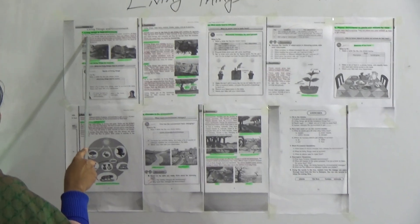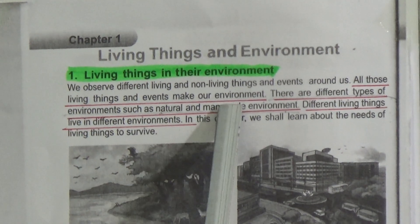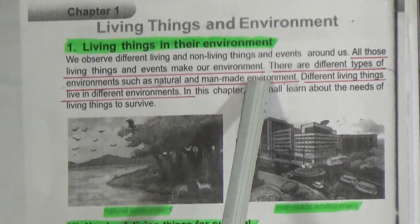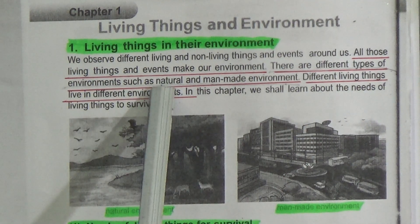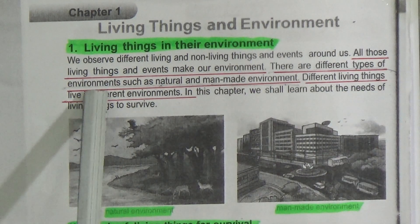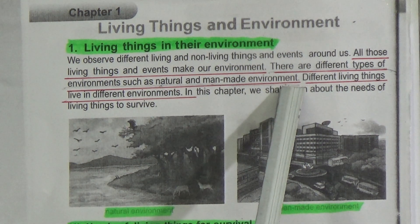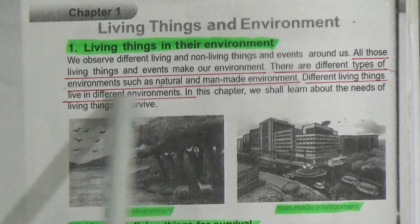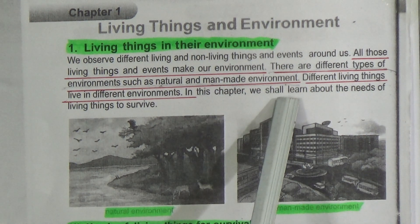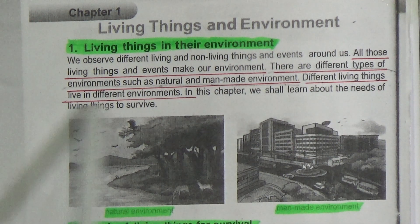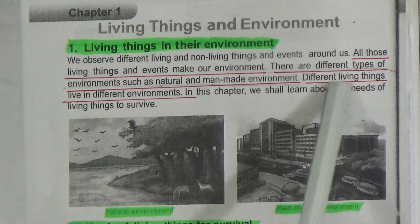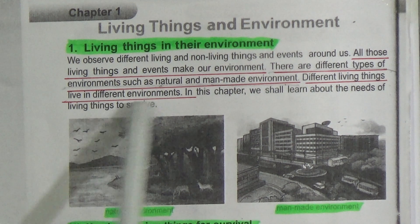Our chapter name is 'Living Things and Environment.' The topic name is 'Living Things in Their Environment.' We observe different living and non-living things and events around us. All those living things and events make our environment. There are different types of environments such as natural and man-made environment. Different living things live in different environments.